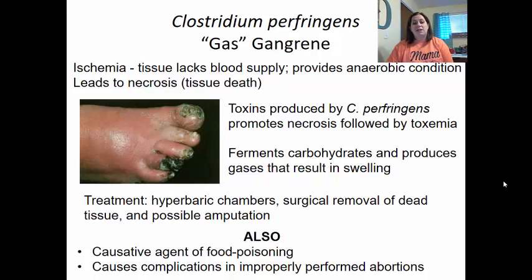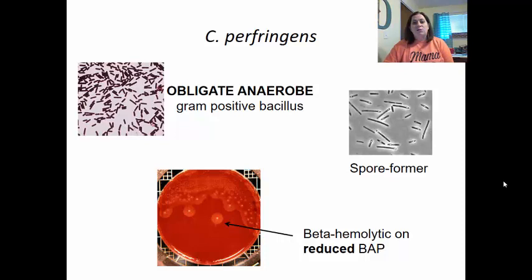Clostridium perfringens is also a causative agent of some food poisoning and causes complications in improperly performed abortions, where gas gangrene develops in the uterus. These organisms are obligate anaerobes — they do not like oxygen. They are gram-positive bacilli that form spores and are beta-hemolytic on reduced blood agars.